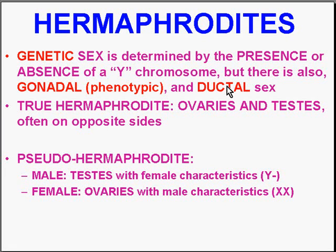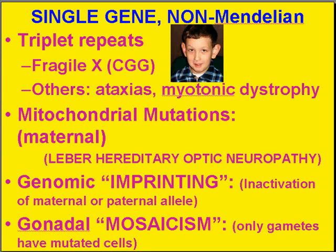Sometimes we use the word 'sex' assuming everyone understands it, but with hermaphrodites the rules can change. Moving to the end of the chapter, let's talk about single gene disorders that don't follow a classical pattern of allelic Mendelian inheritance — these are called single gene non-Mendelian disorders.